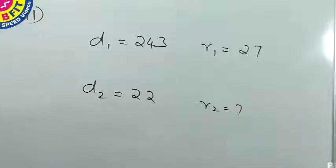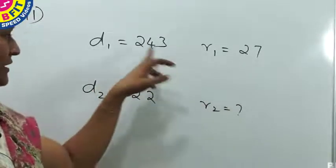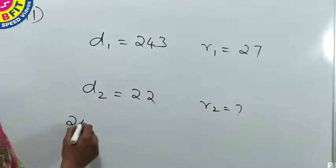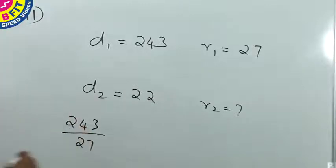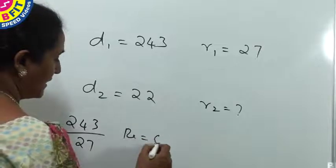First, we have to check whether the first remainder divides the first divisor. Here, 243 is divisible by 27. When you divide 243 by 27, the remainder is 0.